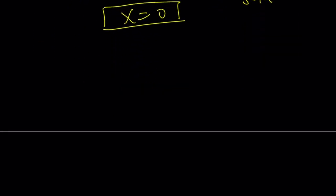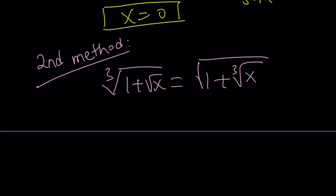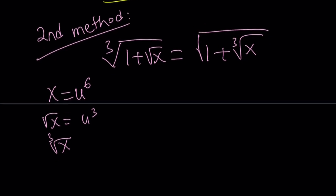Let's go ahead and talk about the second method. For my second method, I'm going to set something that will get rid of the radicals inside the radicals. I have a square root and a cube root, so think about 2 and 3 — the least common multiple is 6. So I'm going to set x equal to u to the power 6. That gives us: square root of x is u cubed, and cube root of x is u squared, assuming x is non-negative.